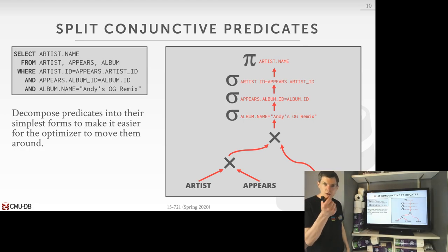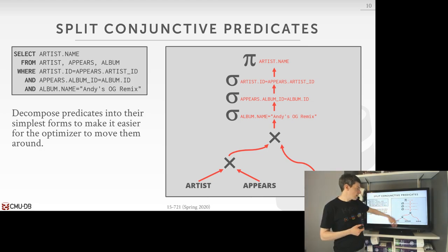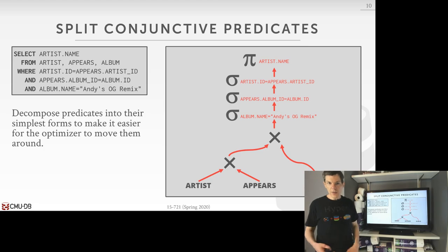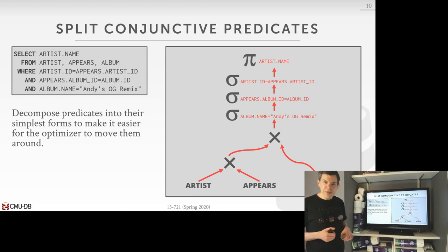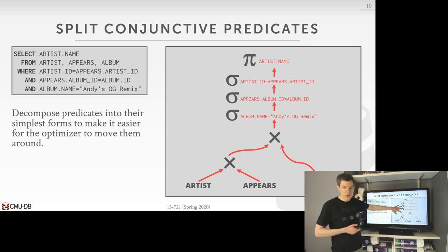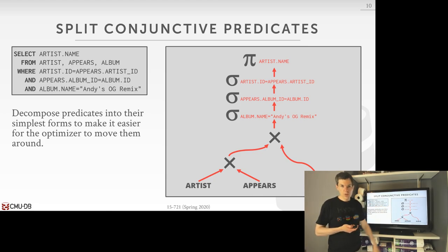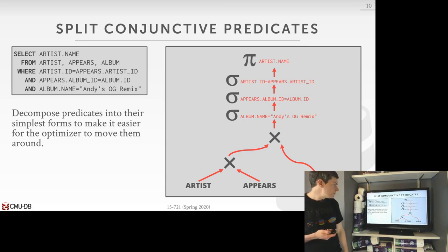In order to start doing predicate pushdown and other optimizations on individual predicate expressions, we want to decompose the filter into multiple filters, each with one conjunction of the where clause. We just split on the AND and get them like this. For ORs it's a bit tricky — you can start duplicating the ORs if you have different conjunctions. NOTs or negations are also a bit tricky, but the high-level idea is essentially the same.